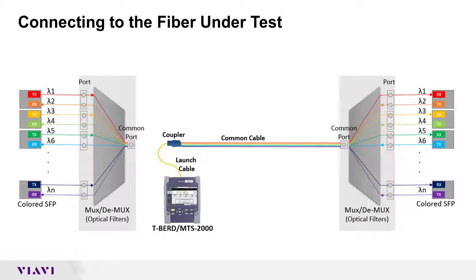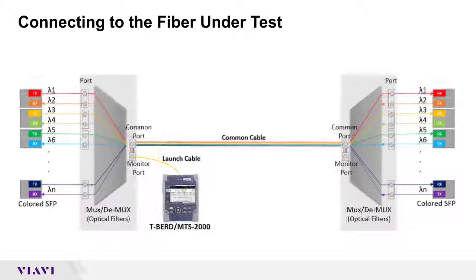During turn-up or maintenance of a CWDM multiplexer, the COSA can be directly connected to the common port or common cable using an optical patch cable and coupler with connectors matching those of the COSA port and the fiber under test. The COSA can also be connected to the fiber under test via a monitor port or tap without disrupting service. In either case, all fibers and connectors should be inspected and cleaned prior to connection.